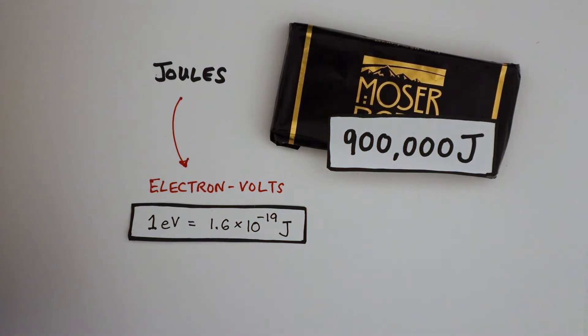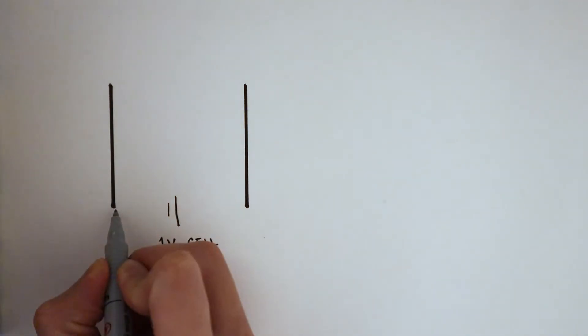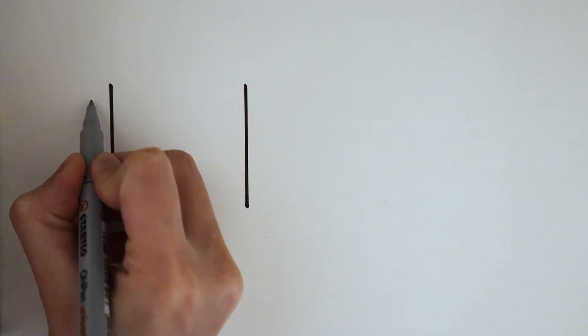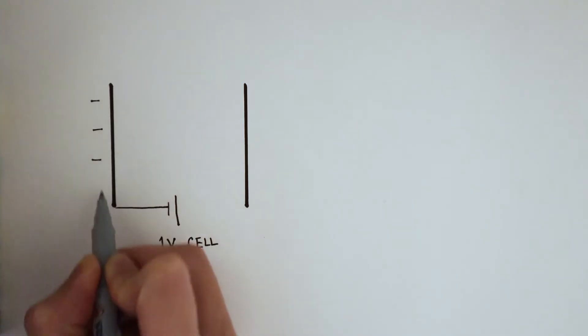This is not an arbitrary number. So how do we come up with this exact number? Imagine we have two metal plates and a cell of 1 volt. This metal plate is connected to the negative terminal, therefore making it negative.